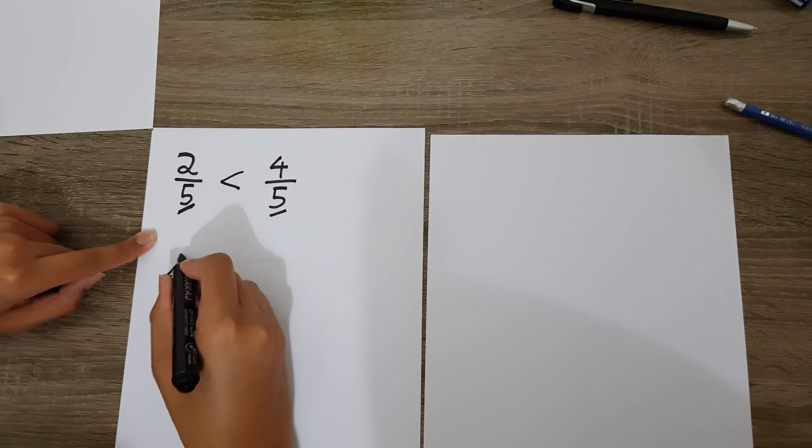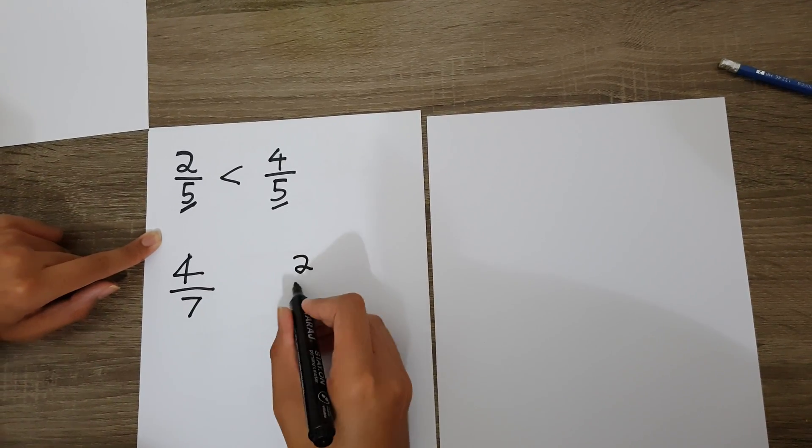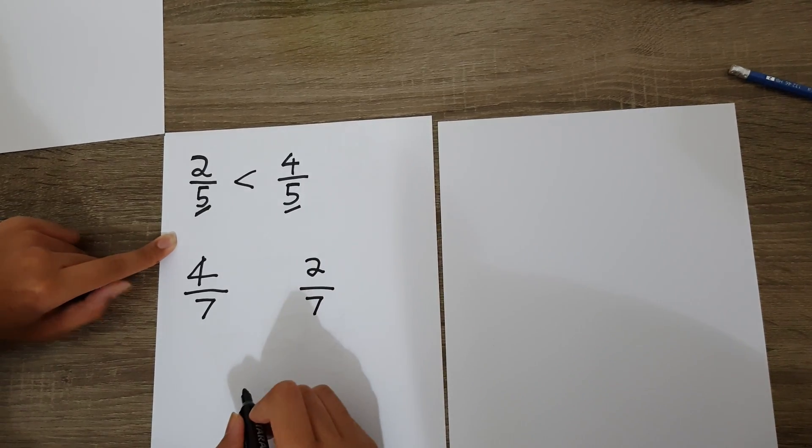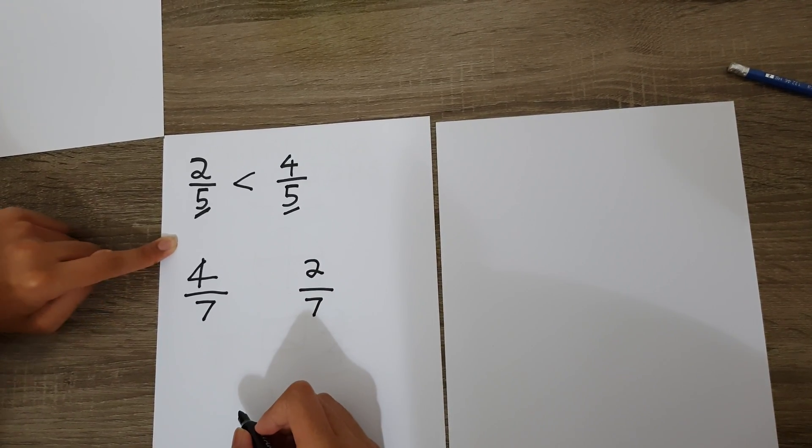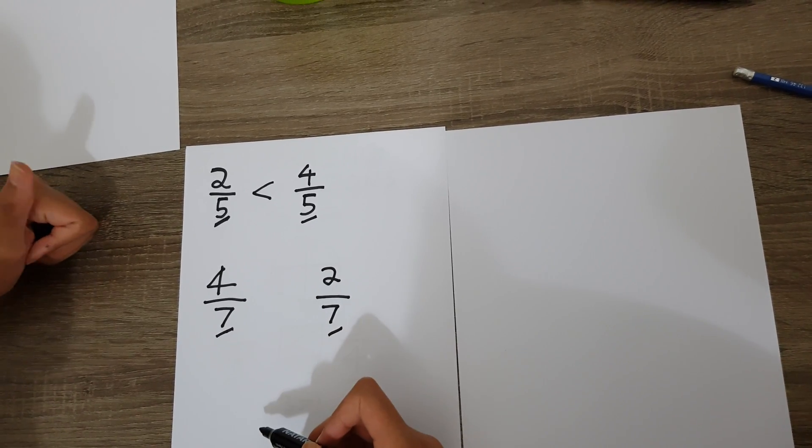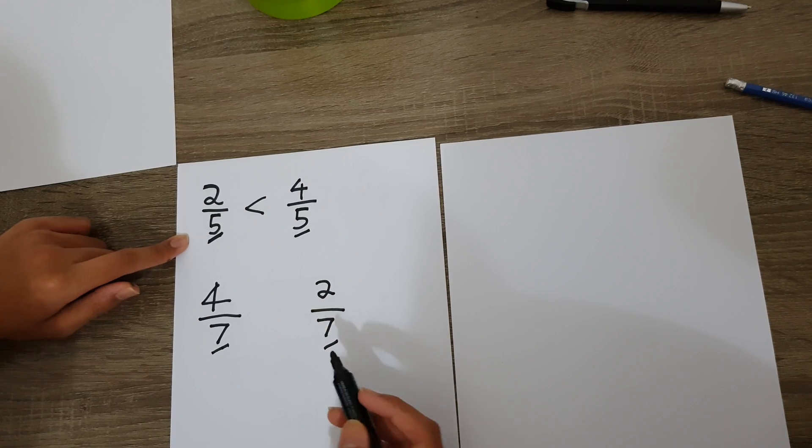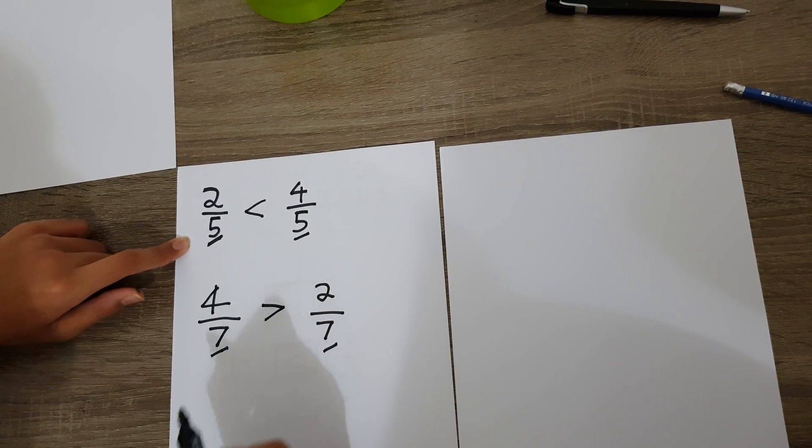Another example is four over seven and two over seven. Which fraction is bigger? First we check the denominator—seven and seven, it's the same. Then we move on to the numerator. Four is greater than two, so four over seven is greater than two over seven.